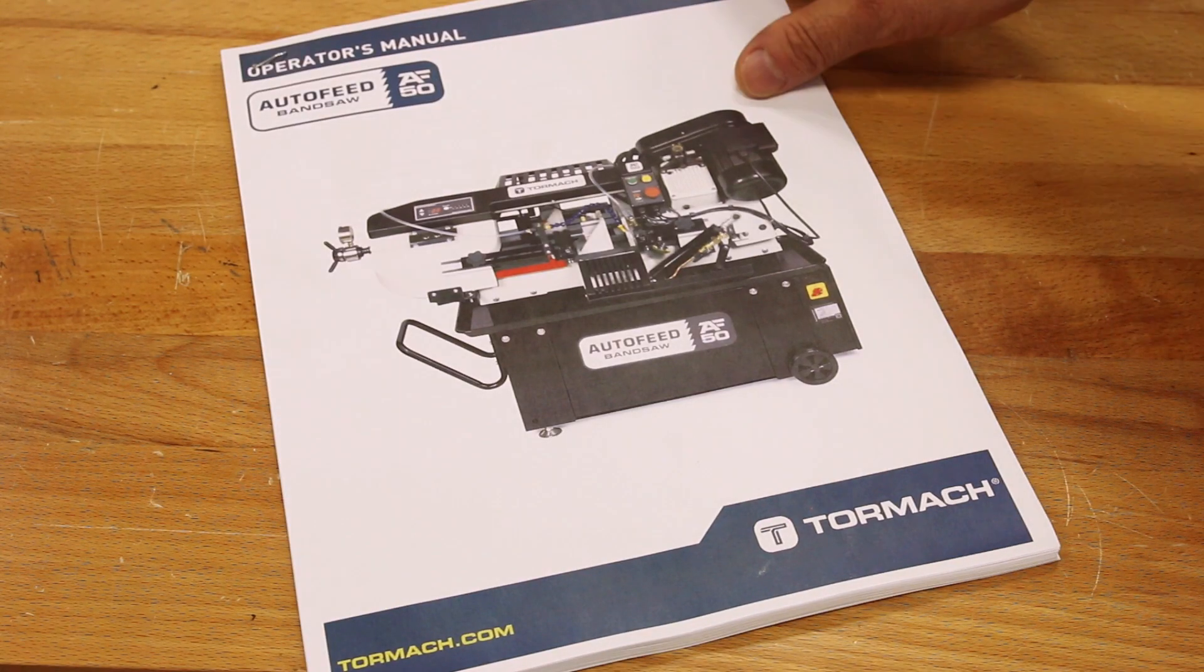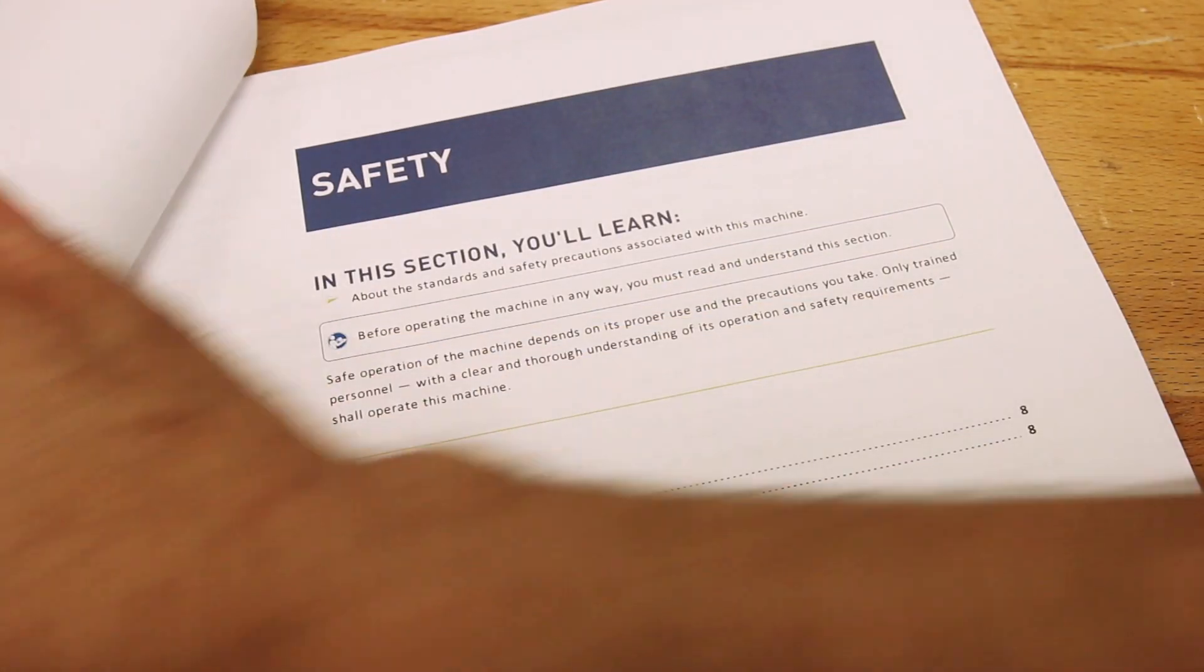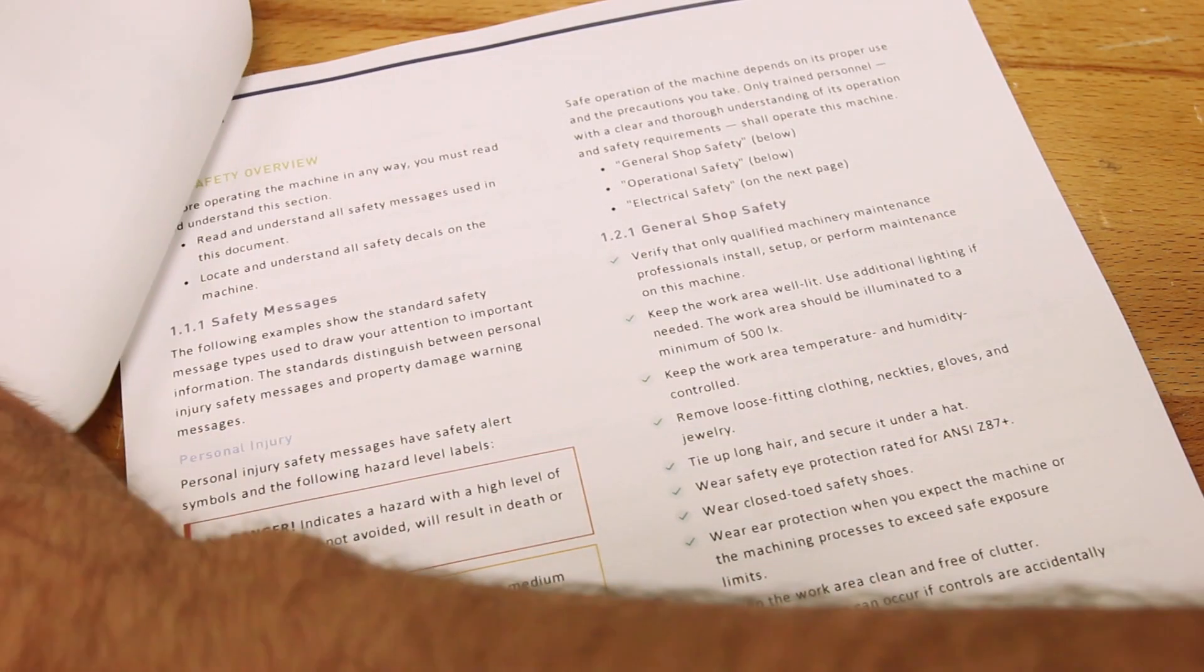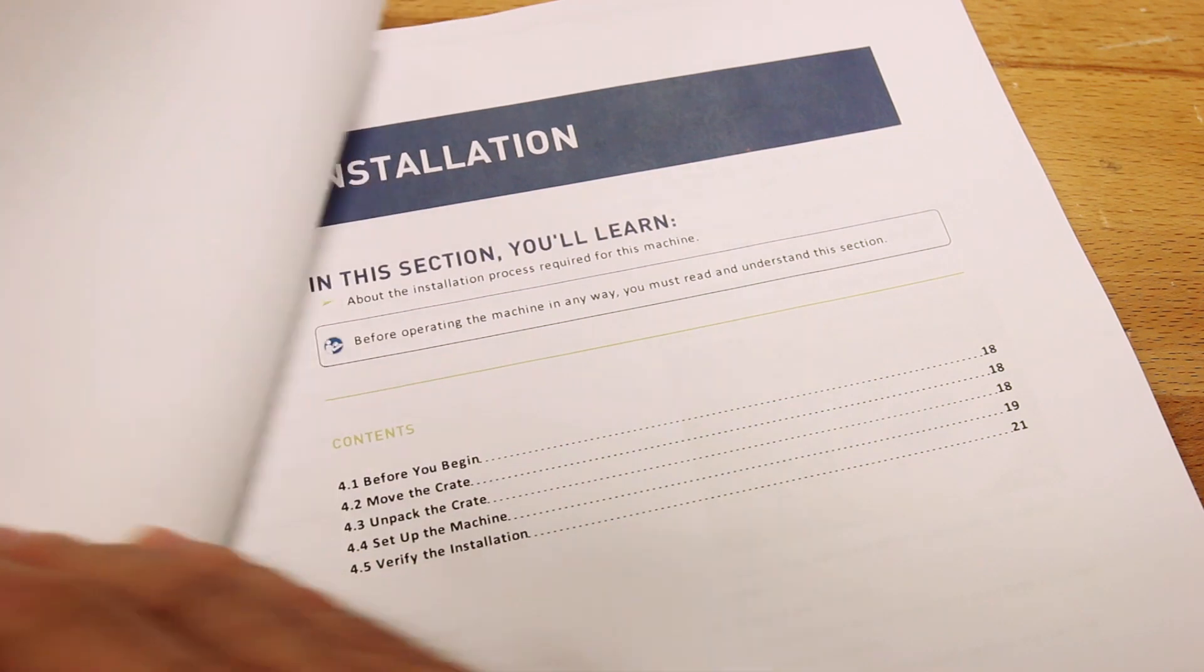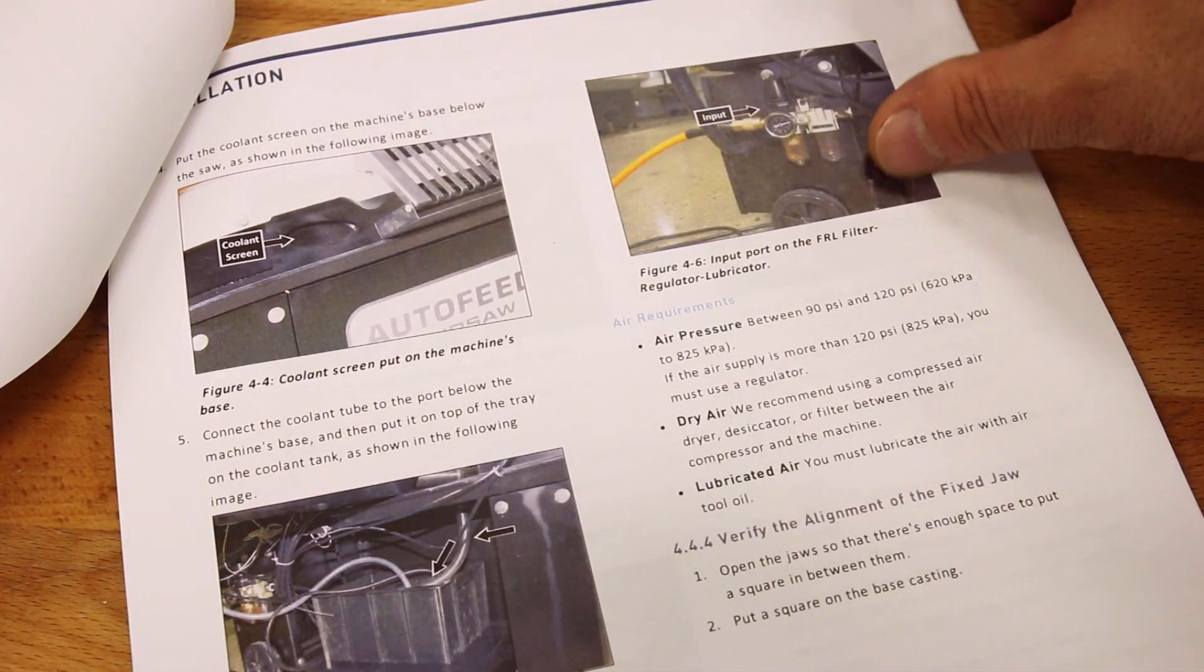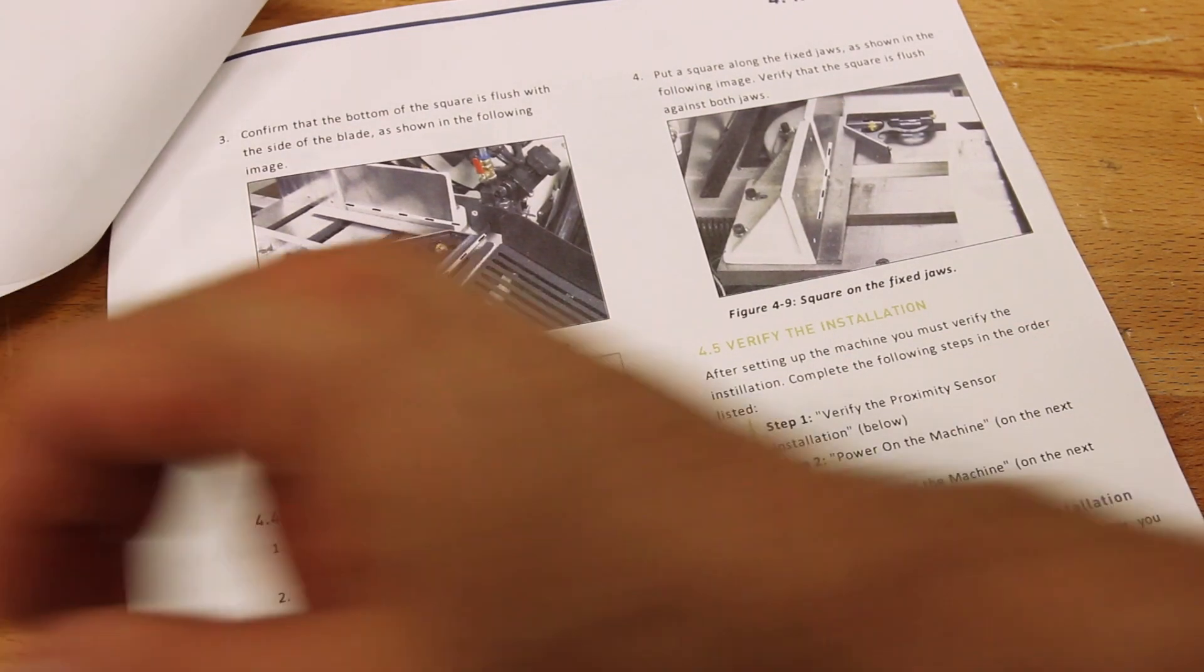You must read the operator manual that came with your product for all the warnings and cautions for the AF50 bandsaw. The operator manual will also cover each step in full detail. Current versions can be downloaded from tormach.com.